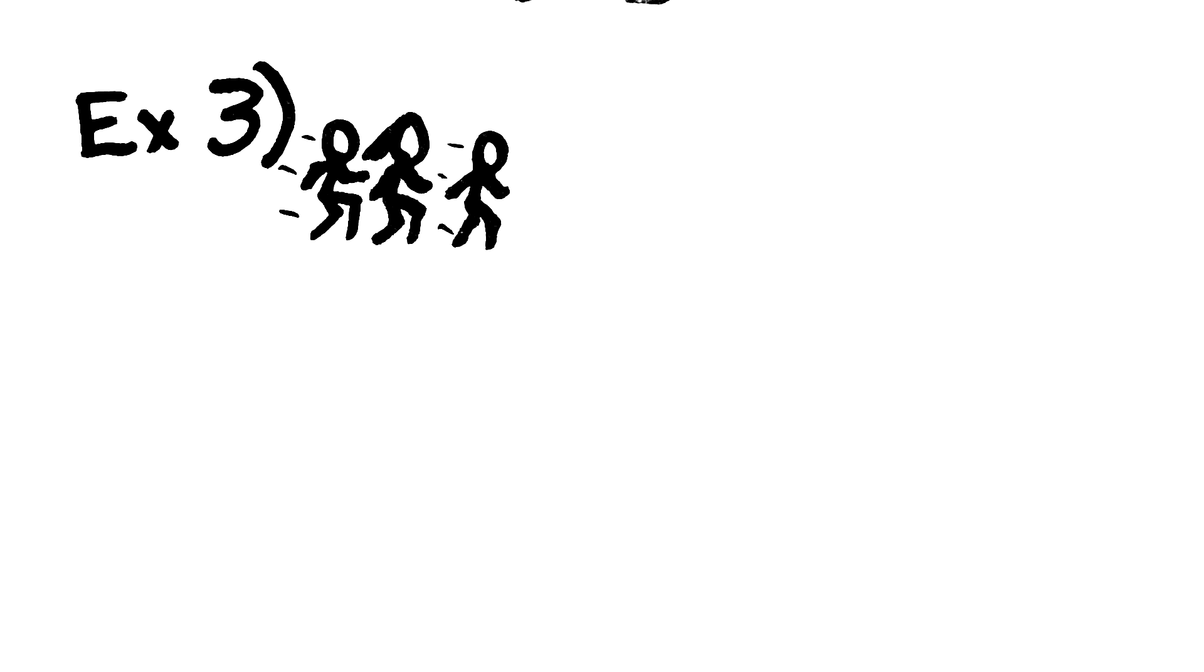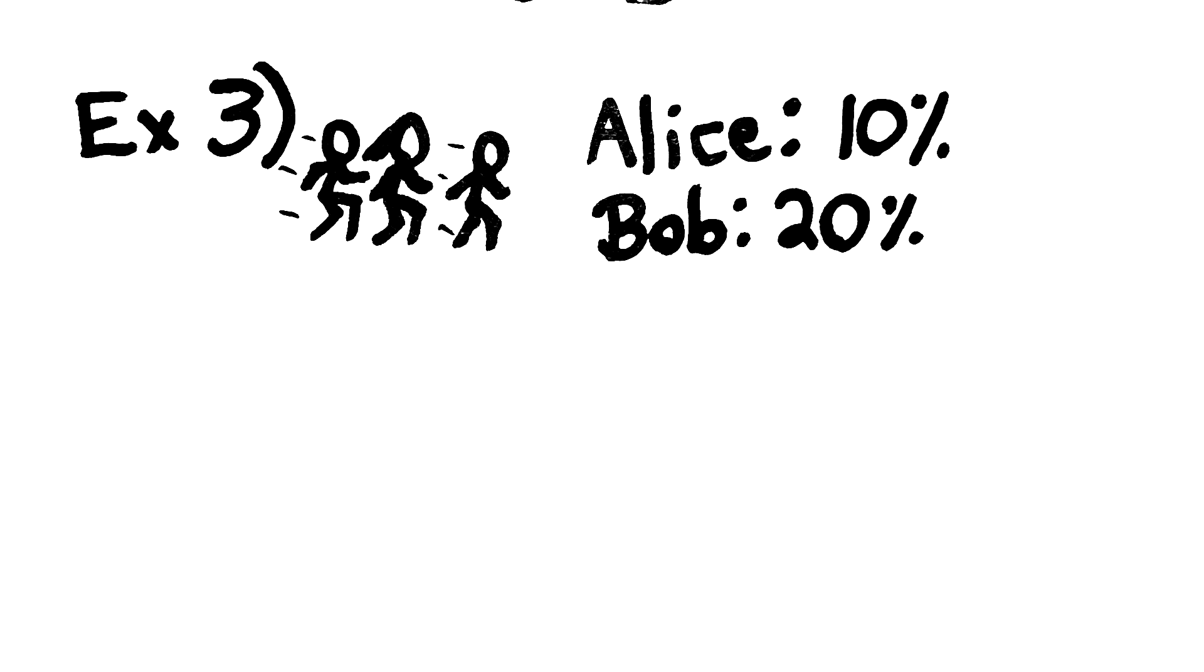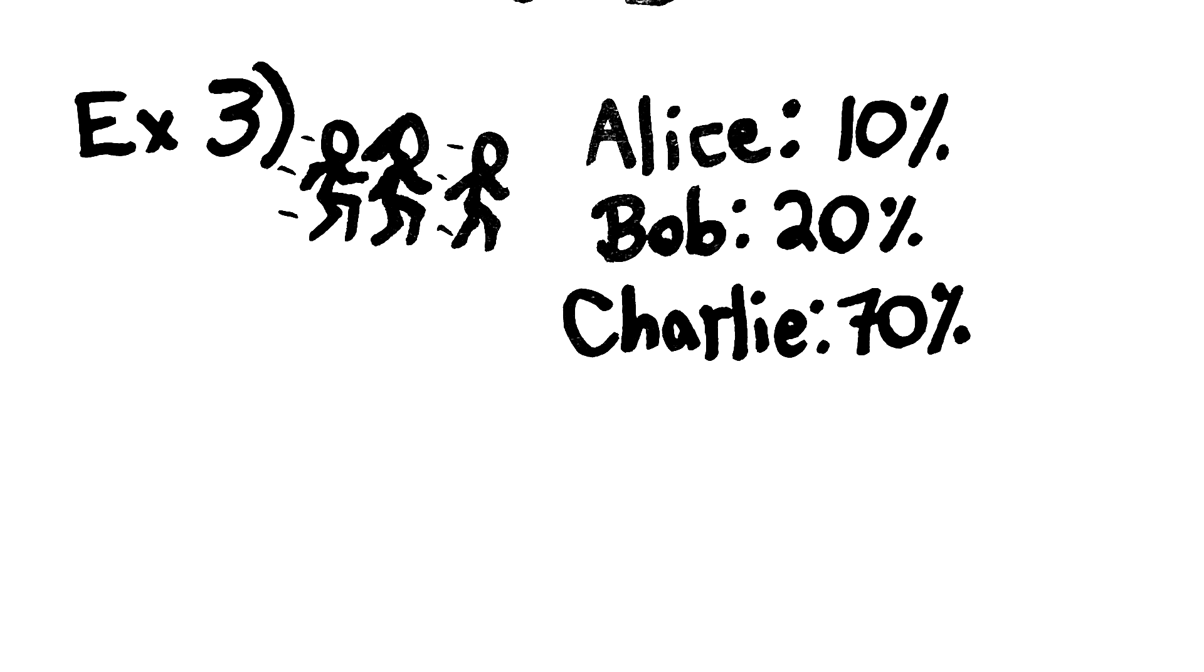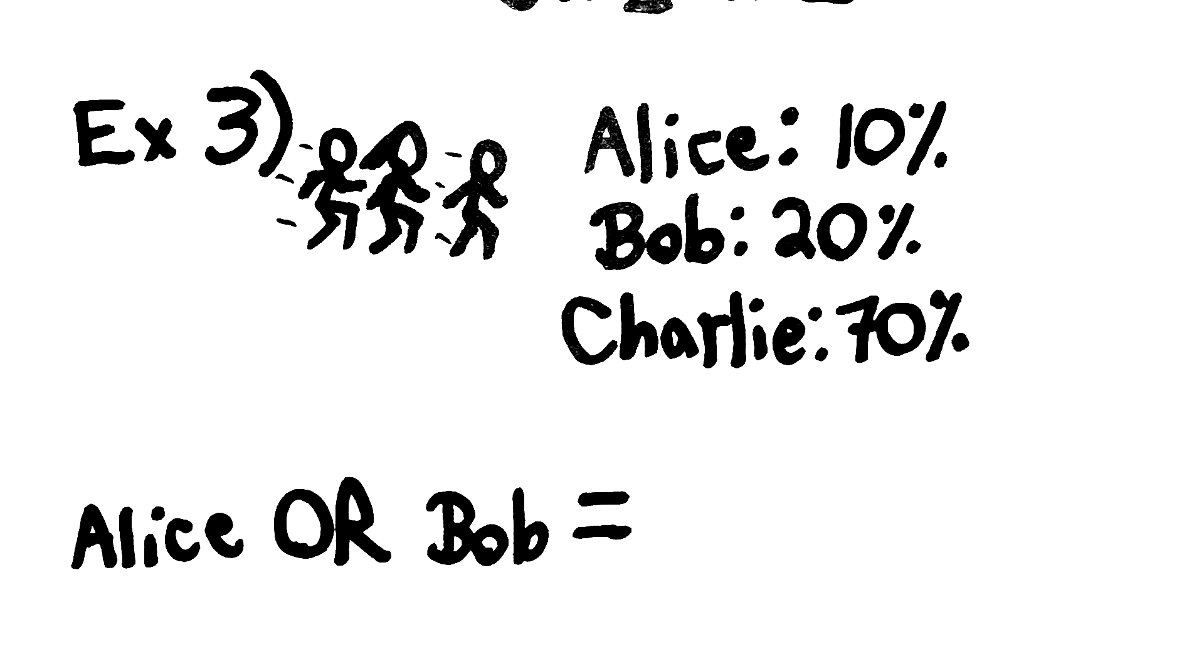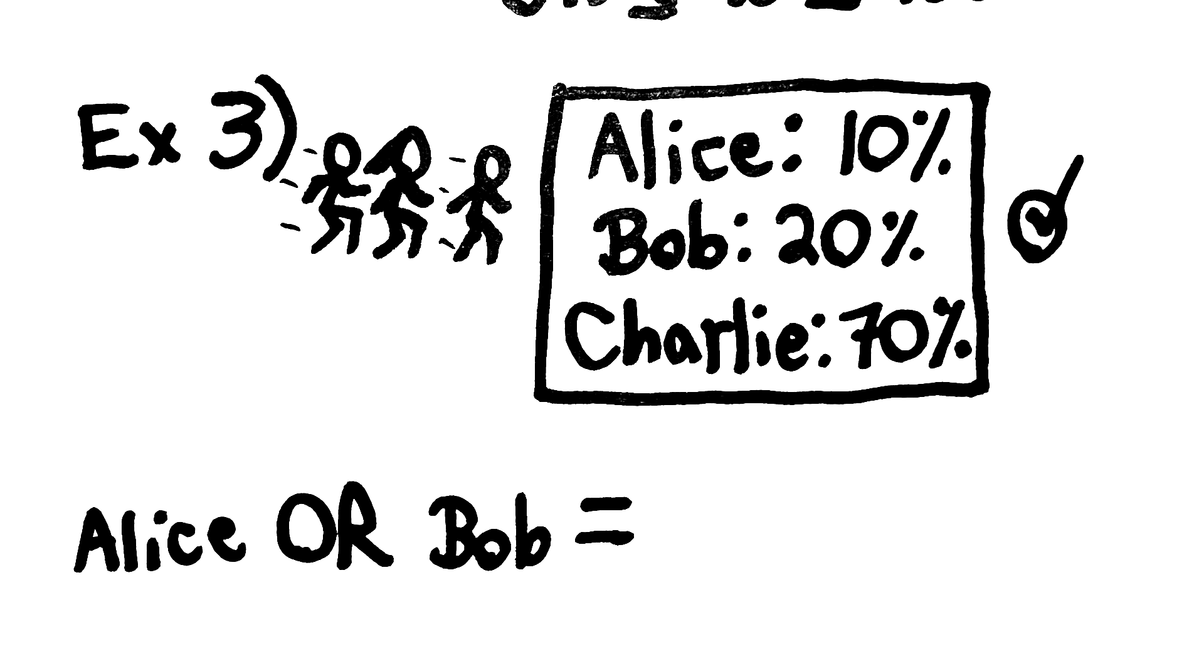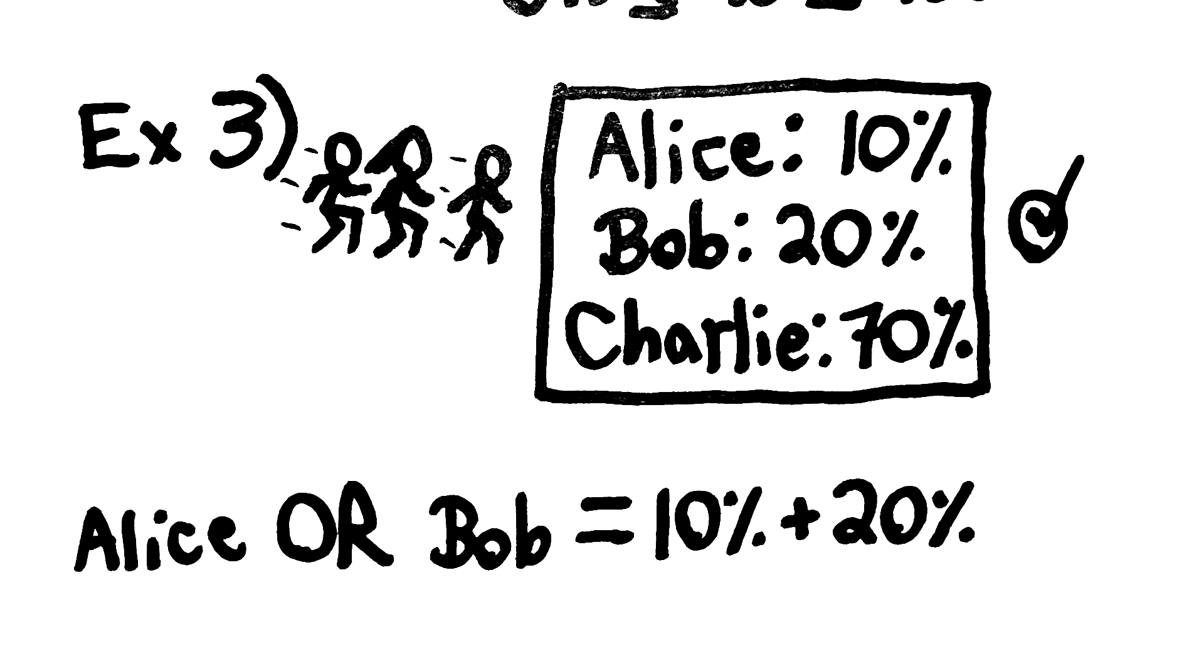Alice, Bob, and Charlie are racing. There's a 10% chance Alice will win, a 20% chance that Bob will win, and a 70% chance that Charlie will win. What's the probability that Alice or Bob will win? This scenario doesn't violate probability theory. Yay! To answer the question, the probability that Alice or Bob will win is 10% plus 20%, which equals a total of 30%.